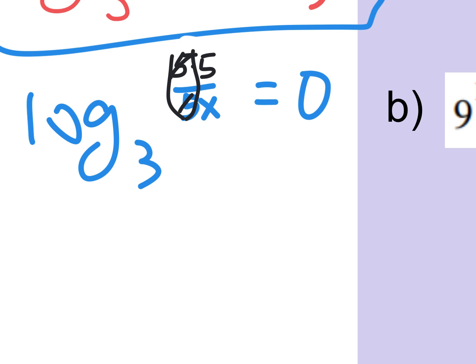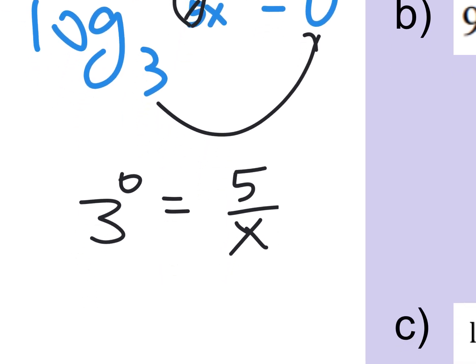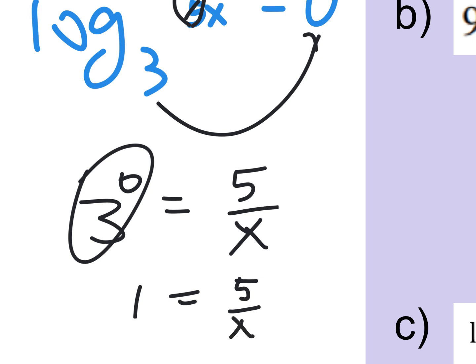A ton of smart kids are going to be stuck on the next test because they won't think of rewriting — rewriting it with a circle of logs. Three to the zero equals five over x. Now so many things become possible: I can clear fractions, simplify three to the zero. Three to the zero is one. So one equals five over x. Multiply both sides by x: x equals five. Done.